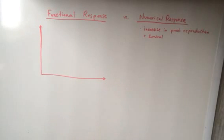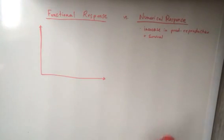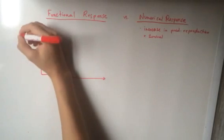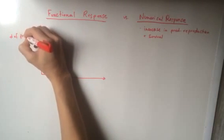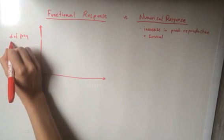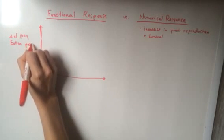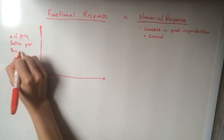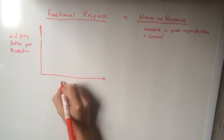Basically, on a functional response graph, you have number of prey eaten per predator. And then on the y-axis, you're going to have prey density.